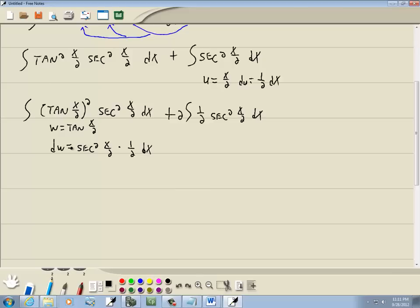So in this part here I'm going to need a 1 half inside so I'll offset it with a 2 out in front, like that, secant squared x over 2 dx.